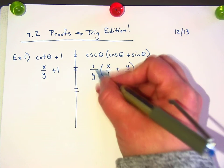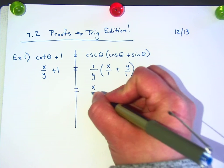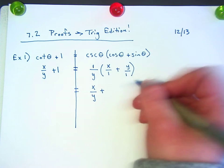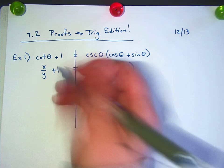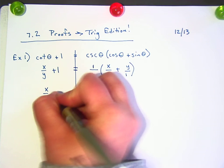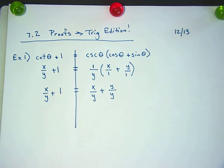So, on this side, x times y. That's x on the top, y on the bottom. Plus, let's see, this is y over y, right?